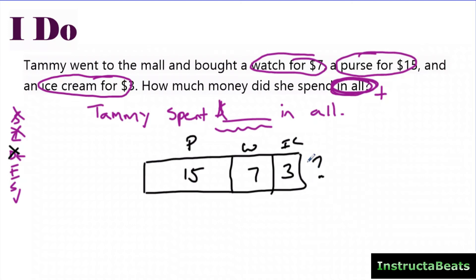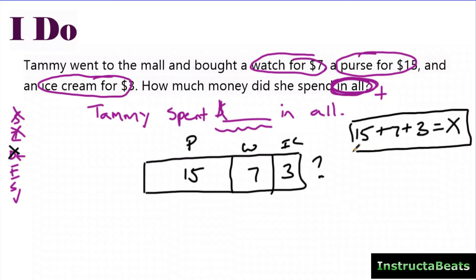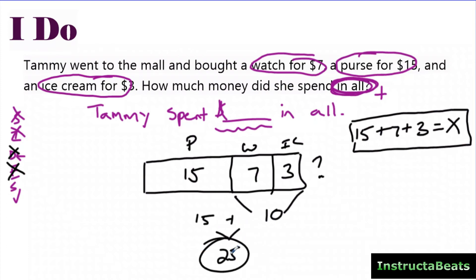As you get into multi-step questions, that question mark is really important — you're not done until you find the value it represents. For students ready for algebra, you can take it off the tape diagram and write an equation: 15 + 7 + 3 = x, where x is your question mark. Then solve: 15 + 7 + 3 = 25. The tape diagram helps you understand what's happening; you still solve using whatever addition method you prefer.